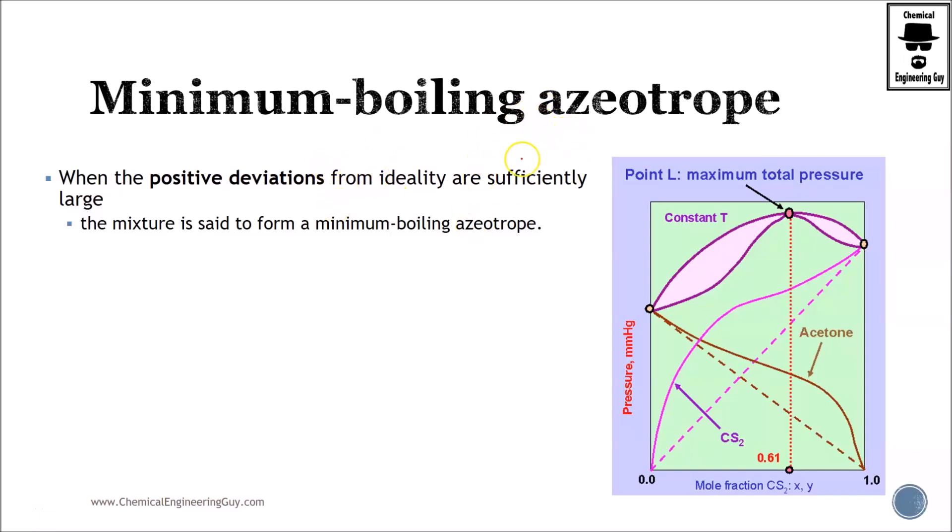Whenever we have an azeotrope, we might have a minimum-boiling azeotrope or a maximum-boiling azeotrope. We're going to start with the minimum-boiling azeotrope because it's the most common one. When we have positive deviations, if you're talking about the pressure diagram, the Raoult's law will be something around here. If you have a minimum-boiling azeotrope, you should have positive deviations, meaning that the lines will be on the top or above the model of Raoult's.